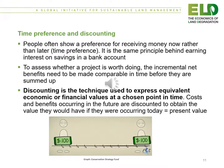A cost-benefit analysis has to consider time preferences and a discount rate. People often show a preference for receiving money now rather than later, which is the time preference — the same principle behind earning interest on savings in a bank account. To assess whether a project is worth doing, the incremental net benefits need to be made comparable in time before they are summed up. Discounting is the technique used to express equivalent economic or financial values at a chosen point in time. Costs and benefits occurring in the future are discounted to obtain the present value.